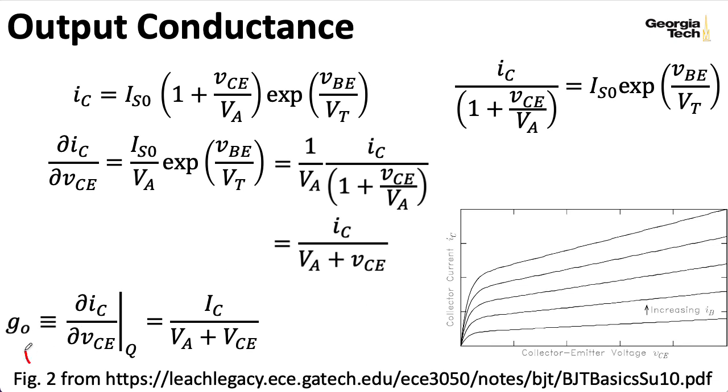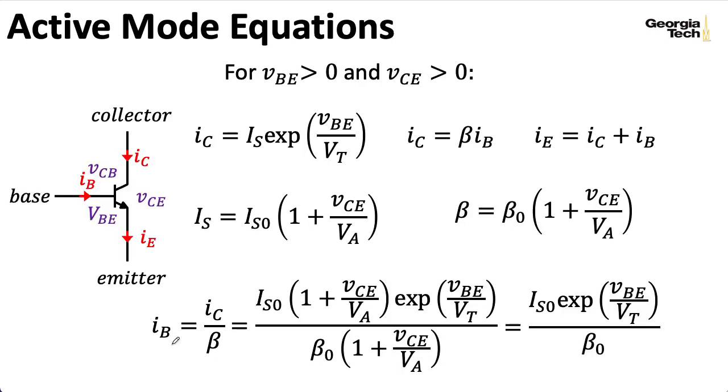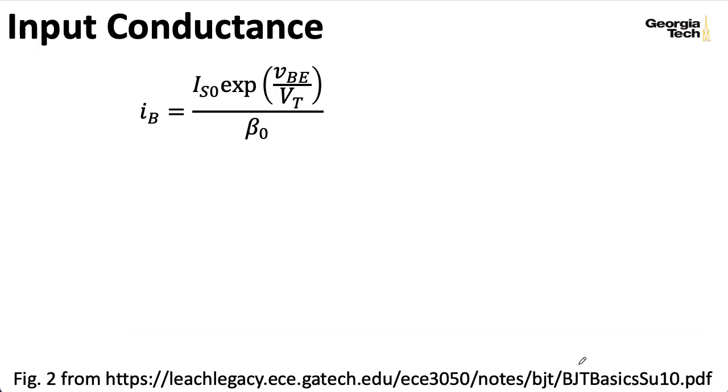Now, most books will express this as a resistance, and I'll do that in a second. The final slope that I want to compute is the slope of the graph of IB with respect to VBE. And I don't have a graph for this. People usually don't draw a graph for this. But we'll just go ahead and use this expression.